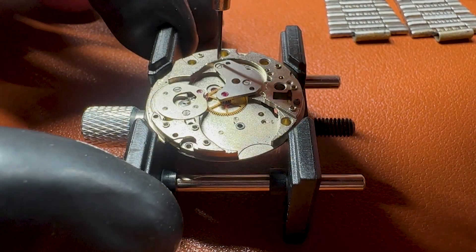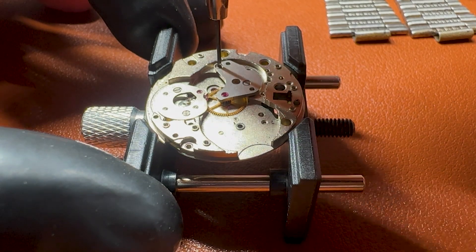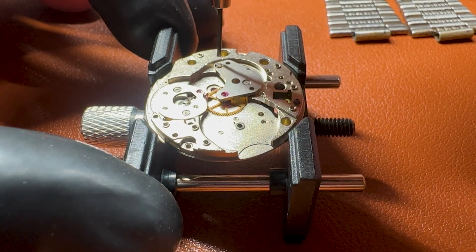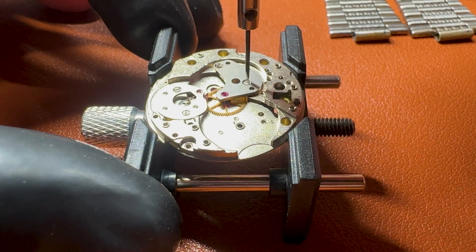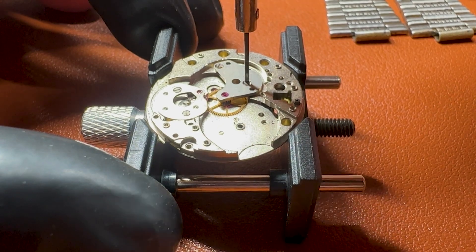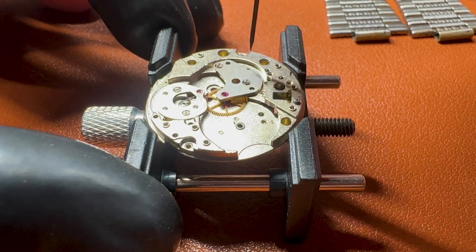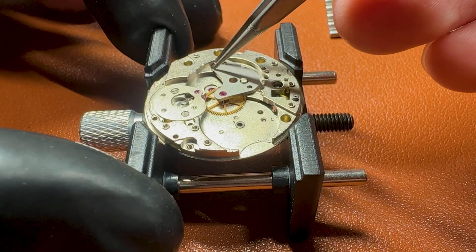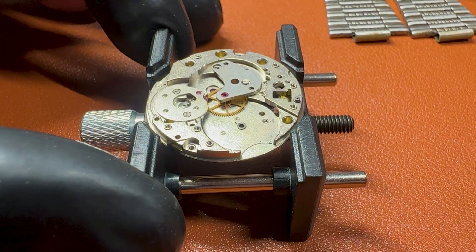This movement has a separate part that is keeping the center wheel, which is very good for the time when we are going to assemble the movement. Because with this metal plate, the center wheel is kept in place and it's a lot easier to insert the cannon pinion.